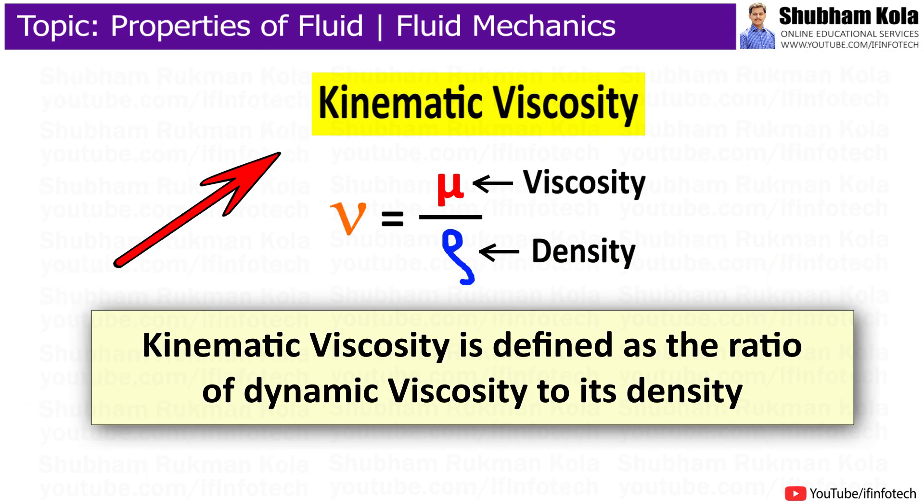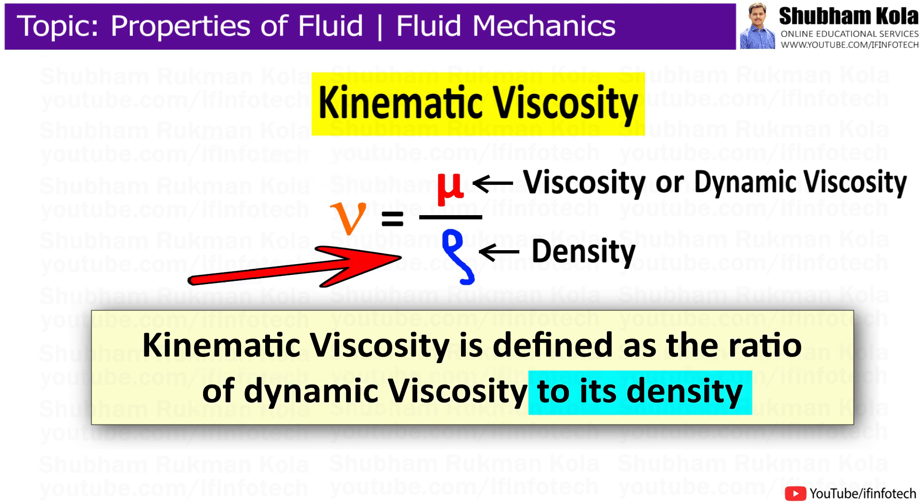The next term is kinematic viscosity, which is defined as the ratio of dynamic viscosity to density. The unit of kinematic viscosity is meter squared per second.